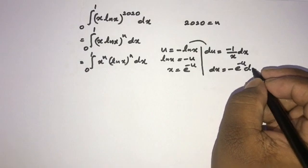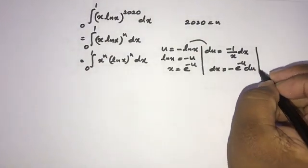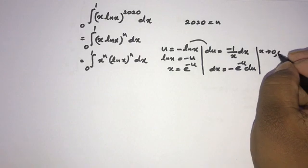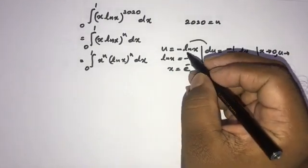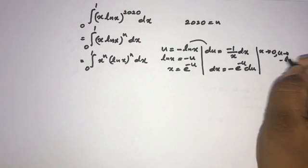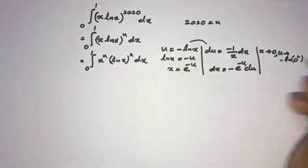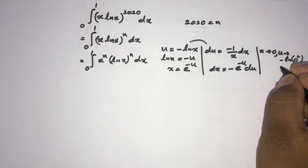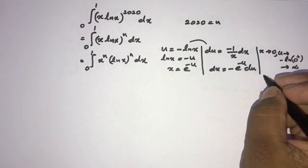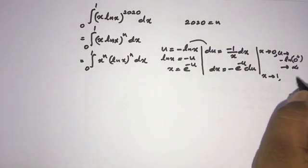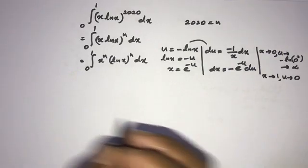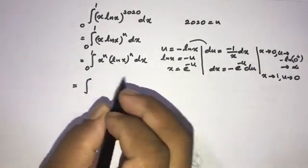So dx equals negative x du, which means dx equals negative e to the minus u du. Now we change the limits. When x approaches 0, u approaches negative natural log of 0 positive, which goes to infinity. When x approaches 1, u approaches negative natural log of 1, which equals 0.